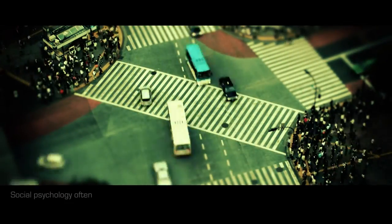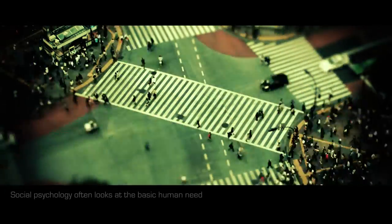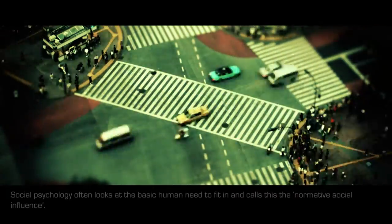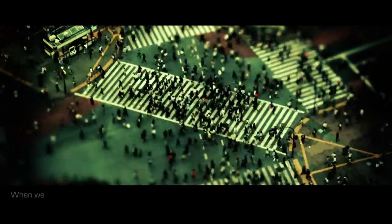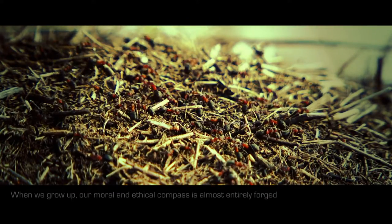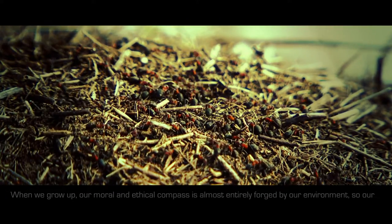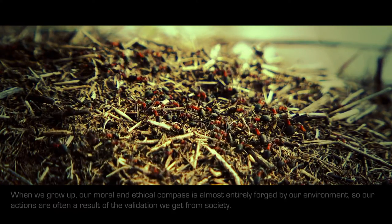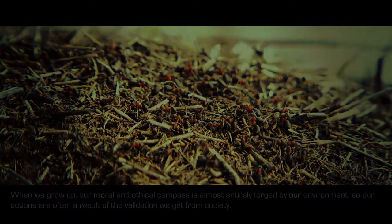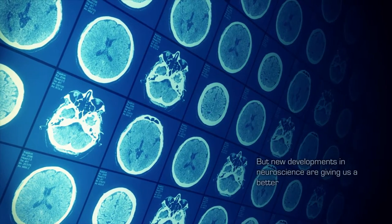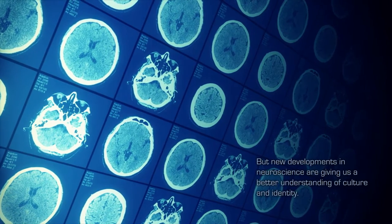Social psychology often looks at the basic human need to fit in and calls this the normative social influence. When we grow up, our moral and ethical compass is almost entirely forged by our environment, so our actions are often a result of the validation we get from society. But new developments in neuroscience are giving us a better understanding of culture and identity.